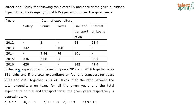Let us look at the question now. If the total expenditure on taxes for the years 2012 and 2016 together is Rs. 181 lakhs — so this year plus this year put together is 181. And the total expenditure on fuel and transport for the years 2013 and 2015 put together is given as 245. So 2012 and 2016 taxes together is 181, and fuel and transport for 2013 and 2015 is 245.